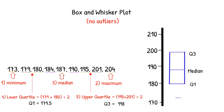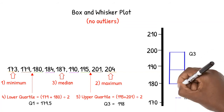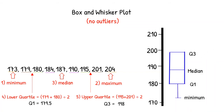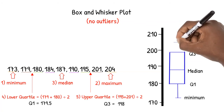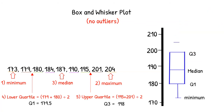Now we put a smaller line at 173, the minimum. This is the end point of our box's first whisker. We put another small horizontal line at 204, the maximum. Now we can draw our second whisker. It is important to note that if we had outliers, this step would be slightly different. We will discuss an additional step that we would need to take in a future video.